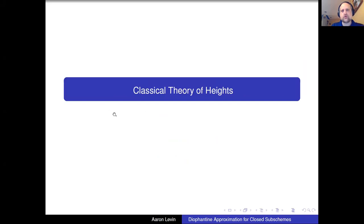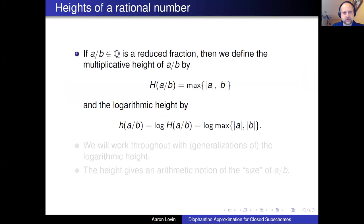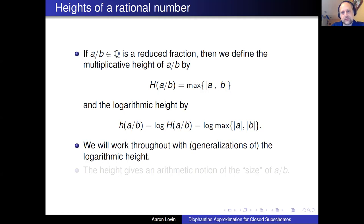I want to start by going through the classical theory before we get to how to generalize to subschemes. Recall that the height of a rational number written in reduced form — so the GCD of the numerator and denominator is one — is simply the max of the absolute values of the numerator and the denominator. It turns out to be more convenient to work with the logarithm of this quantity. We'll work throughout with this logarithmic height. One way to think about the height is as some arithmetic notion of the size of the rational number, or a physical notion if you look at the number of digits.